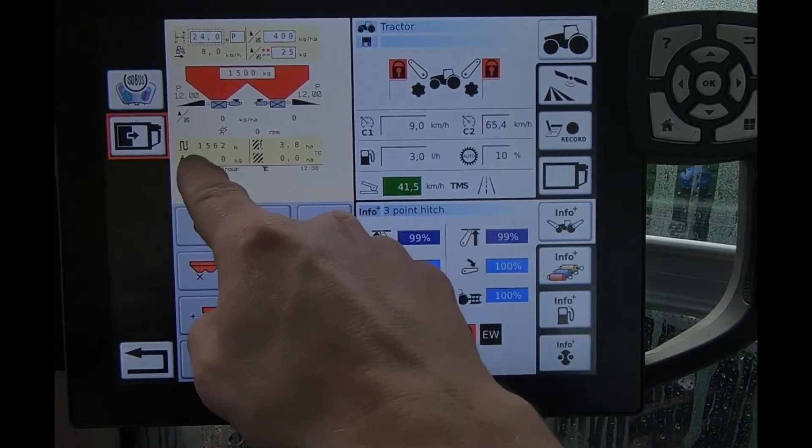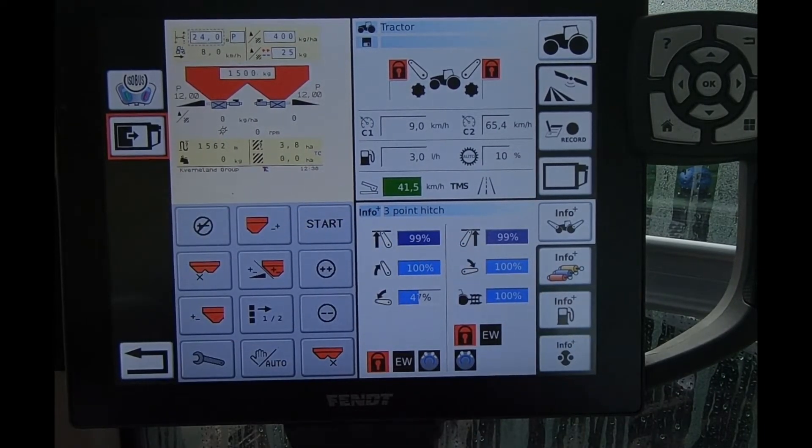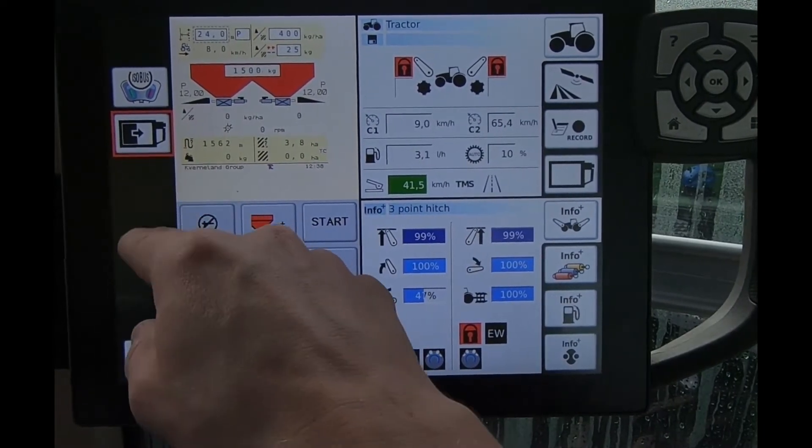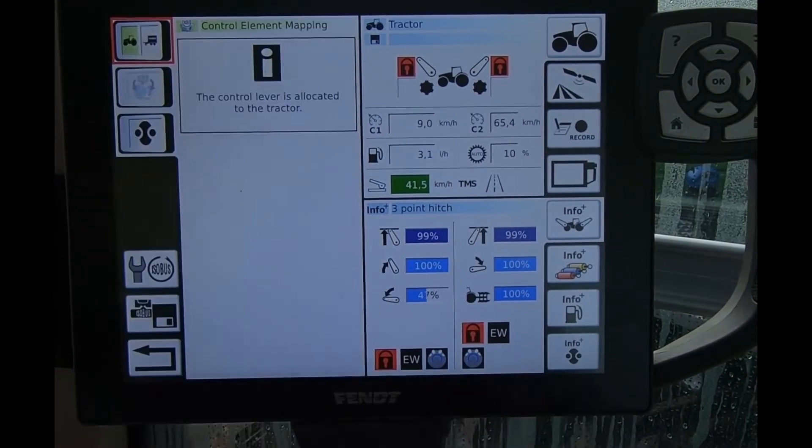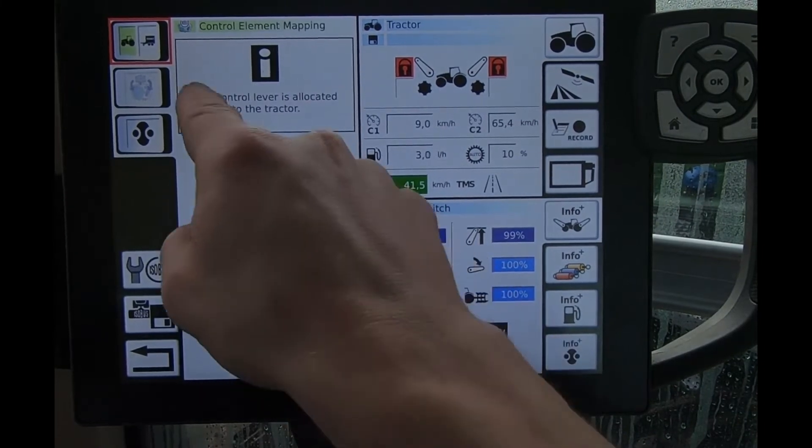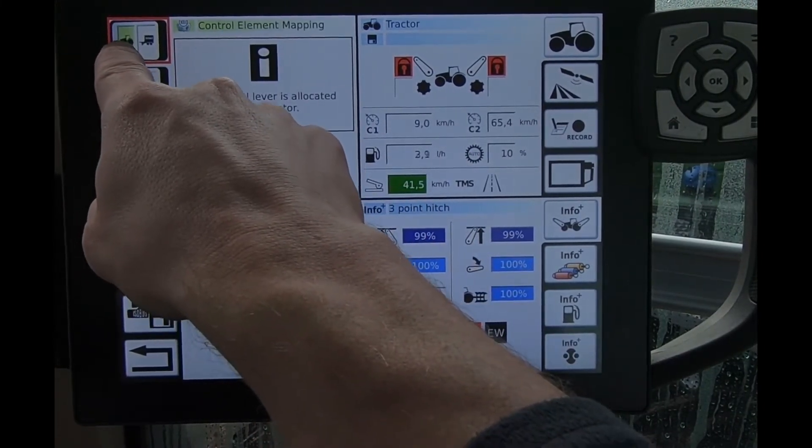So down the bottom then we can see we've got some spreader controls and I can move these over to my joystick. The way we do that then, as you can see here, we've got this ISOBUS with a picture of the joystick. If I press on that one, at the moment it's toggled over to the tractor.